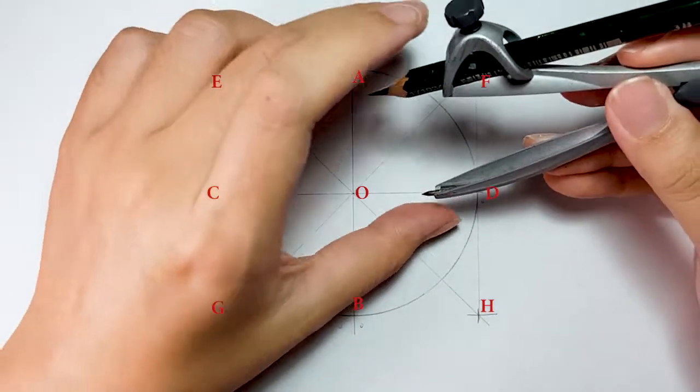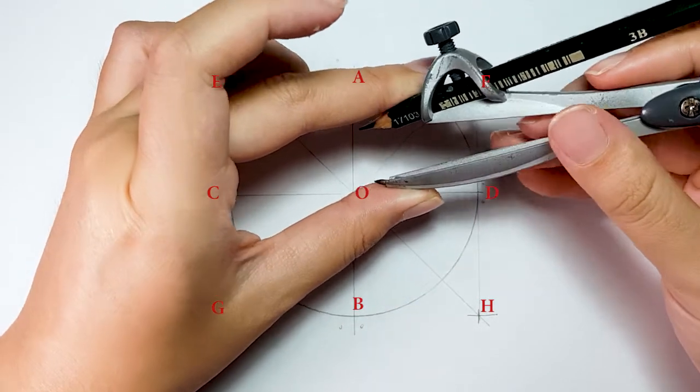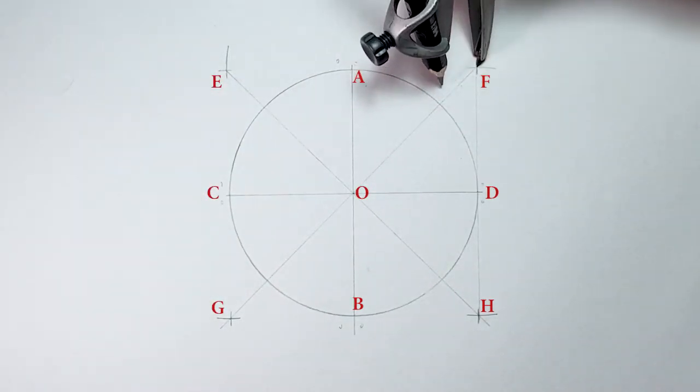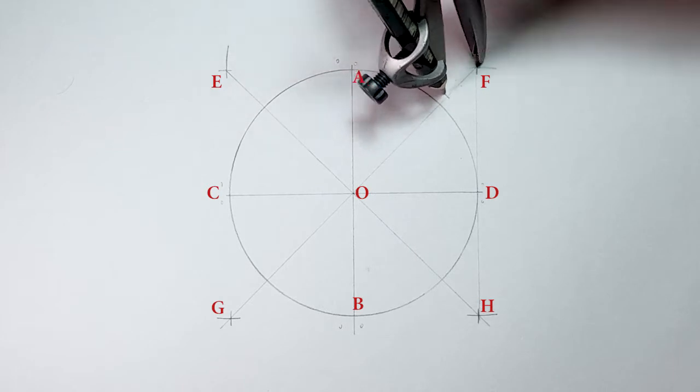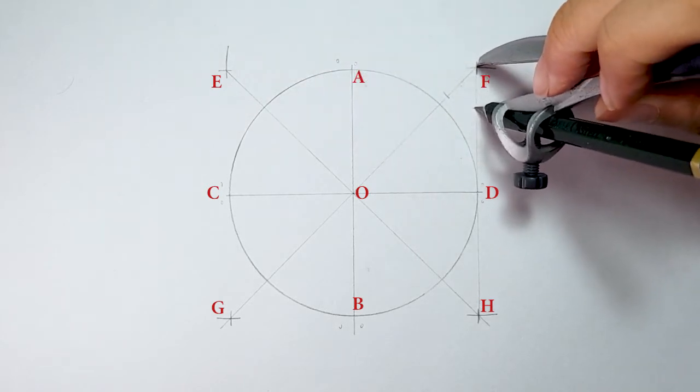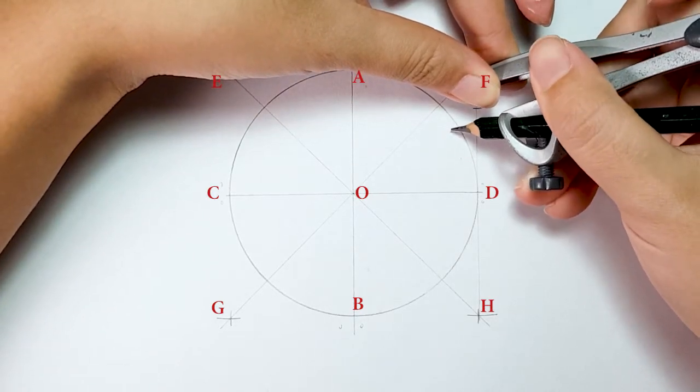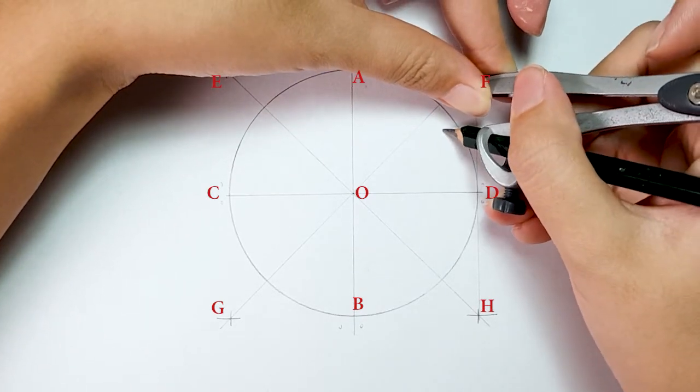Next step is to bisect the angle by adjusting your compass and place on point F. Then, draw marks on both lines. Adjust your compass again and place on the marked points to draw a bisector mark.